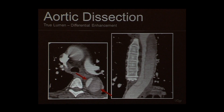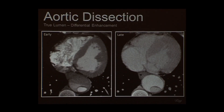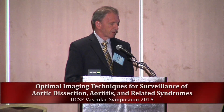CT's excellent resolution and robust imaging in the presence of disturbed flow allow us to identify the entry tear and visualize retrograde dissection up the aorta. Depending on the acquisition phase, the true lumen enhances early, and later contrast is seen lingering in the false lumen, providing additional diagnostic information from the dynamic study.